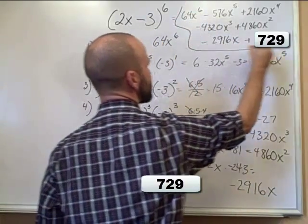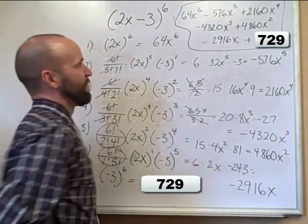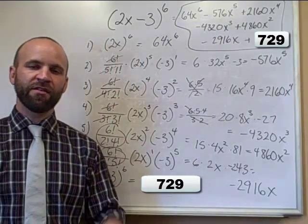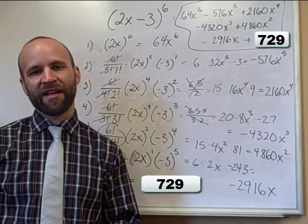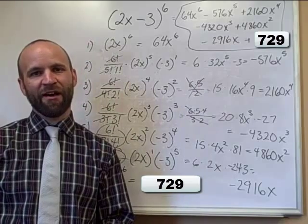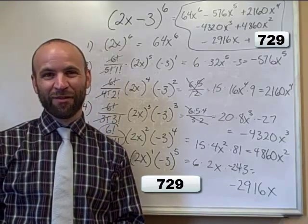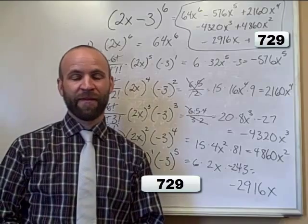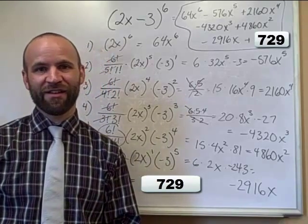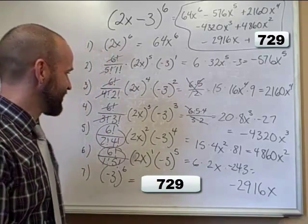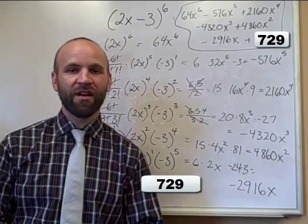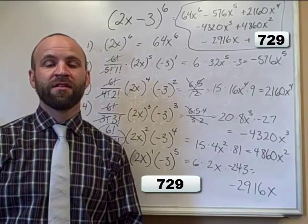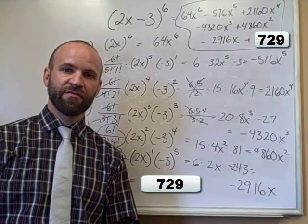So the polynomial expansion of 2x minus 3 to the sixth power is: 64x to the sixth, minus 576x to the fifth, plus 2,160x to the fourth, minus 4,320x to the third, plus 4,860x squared, minus 2,916x, plus 729. I really want you to imagine doing that the long way without using the binomial theorem — hopefully you realize this is a much quicker, more efficient, and frankly more fun way to expand binomials.